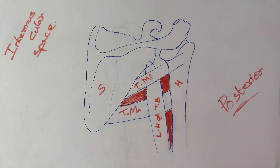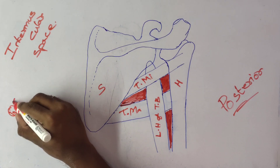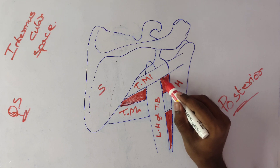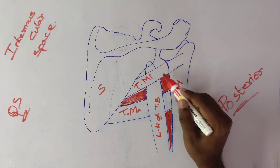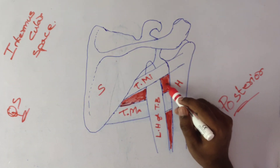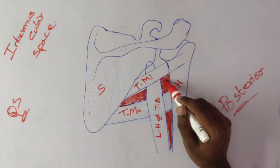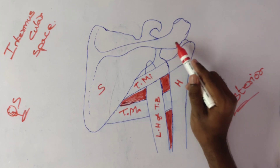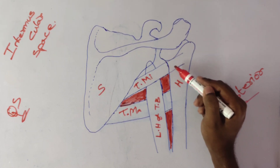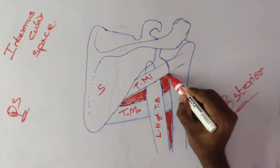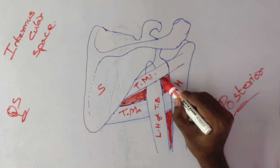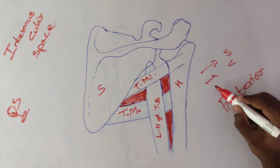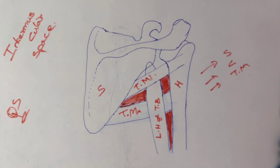Now coming to the quadrangular space: at the superior side, it is occupied by subscapularis muscle and the capsule of the shoulder joint. At the inferior border of teres minor — this is teres minor. So superiorly we have three parts: subscapularis, capsule of the shoulder joint, and teres minor muscle.